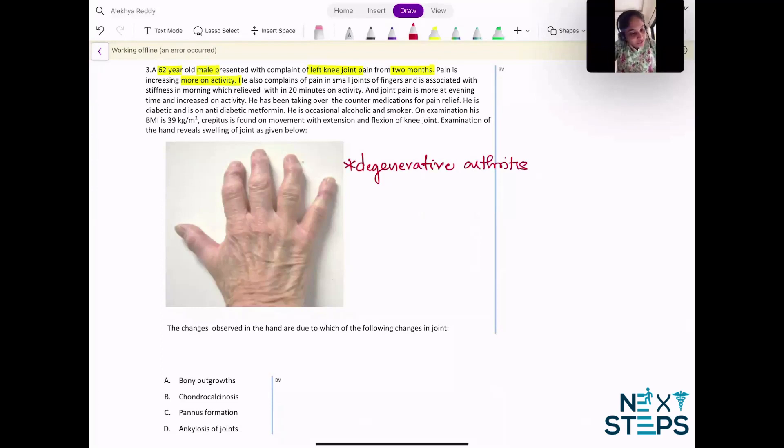Complaints of pain in small joints of fingers is also there and is associated with stiffness in the morning, but it is relieved within 20 minutes. So it is stiffness less than one hour, again contributory to degenerative arthritis.